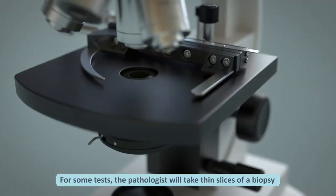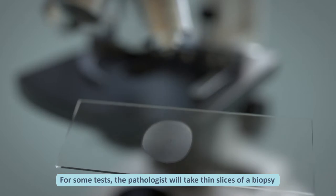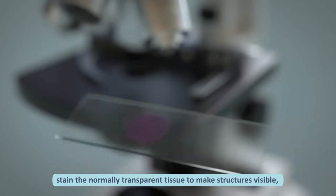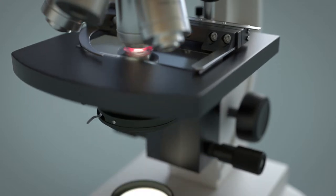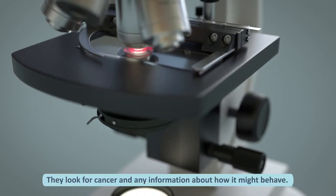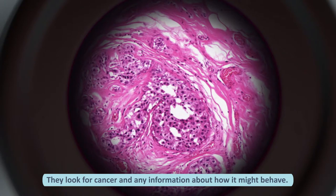For some tests the pathologist will take thin slices of a biopsy, stain the normally transparent tissue to make structures visible, and view them under a microscope. They look for cancer and any characteristics that can provide more information about how it might behave.